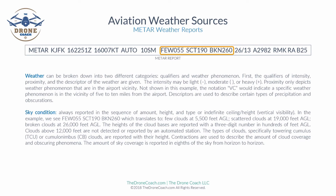Descriptors are used to describe certain types of precipitation and obscurations. Sky and weather conditions are always reported in sequence of amount, height, and type, including indefinite ceiling height or vertical visibility. In this example we see few clouds at 5,500 feet, scattered at 19,000 feet, and broken clouds at 26,000 feet. Clouds above 12,000 feet are typically not detected by automated stations. Towering cumulus (TCU) and cumulonimbus (CB) clouds are reported with their height. Sky coverage is reported in eighths of the sky from horizon to horizon.